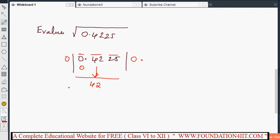0.4225. 42's nearest perfect square is 6×6, which is 36, because 7×7 is 49, which is more than 42. 42 minus 36 is 6. Take the next set, 25. 6 doubled becomes 12. After 12, one more number. 125 divided by 5 gives 625. So 0.65 is the square root of 0.4225.